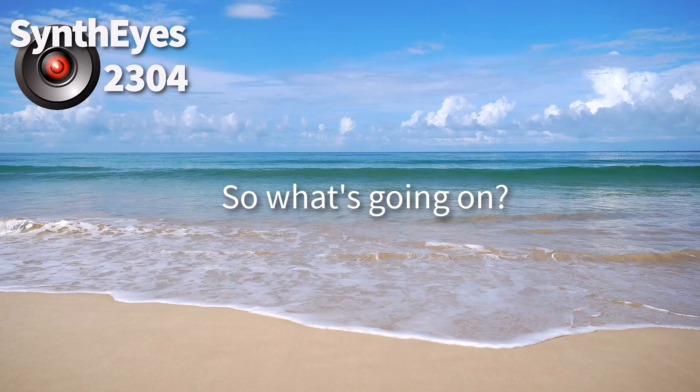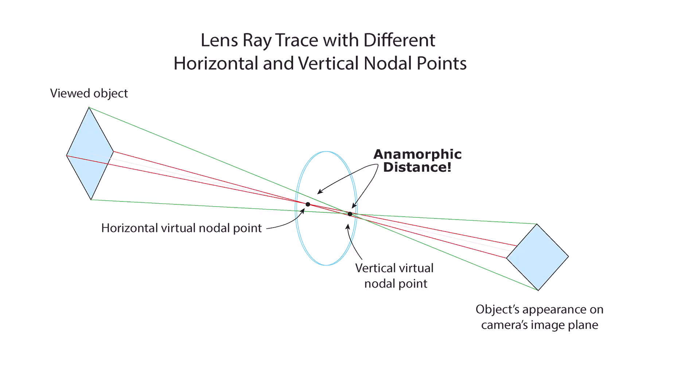So what's going on? Anamorphic lenses can have two different nodal points, one for the horizontal direction and one for the vertical. You can see that here, where horizontal rays intersect at one point and vertically aligned rays intersect at another.